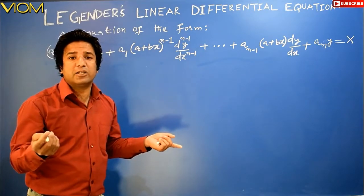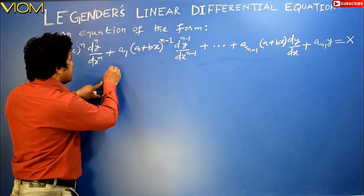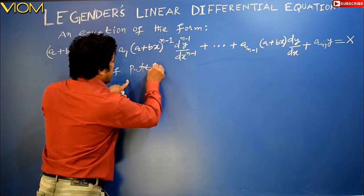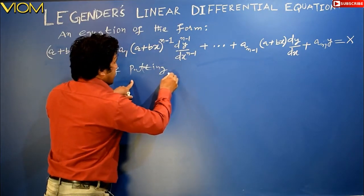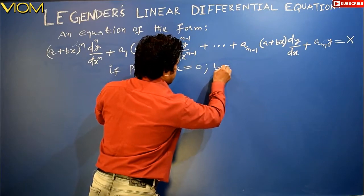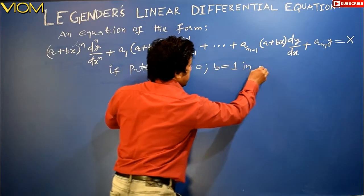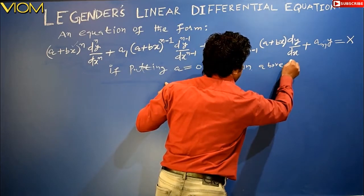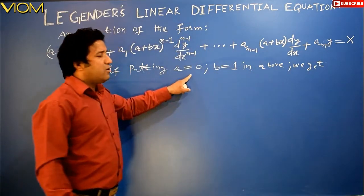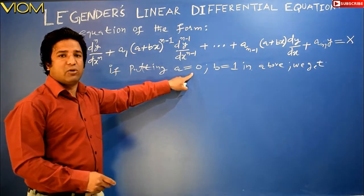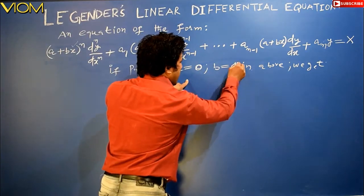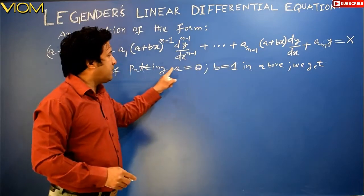How can I say this is a generalization? By putting a = 0 and b = 1 in the above differential equation, we get: whenever we see a = 0 and b = 1 in the above differential equation, we substitute these values.